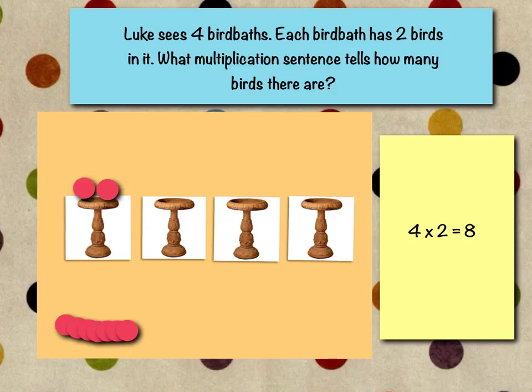Let's take a look at our first question. Luke sees four bird baths. Each bird bath has two birds in it. What multiplication sentence tells how many birds there are? Well, the first thing we need to do is draw ourselves a picture. Even if you can't take the time to draw a really cute bird bath, you can draw circles or some kind of container to put your birds in and just pretend it's a bird bath.